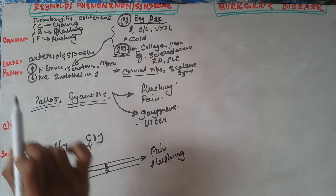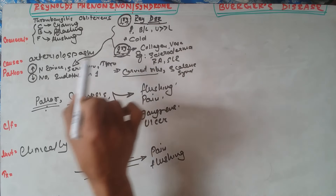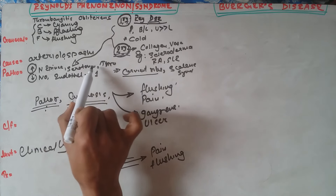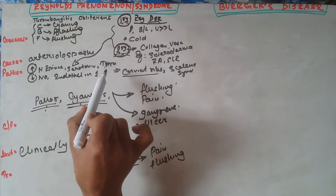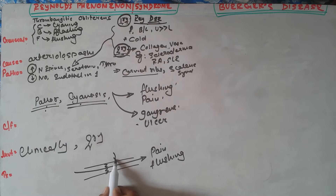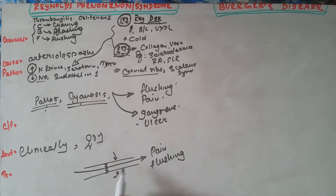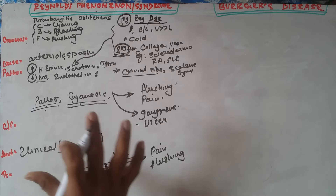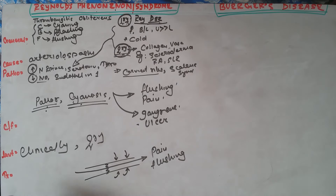Regarding pathophysiology: during cold exposure there is an increased amount of epinephrine, serotonin, and thromboxane, which are vasoconstrictors that predispose or increase the arterial spasm. The vasodilators like nitric oxide and endothelin-1 are decreased, which further increases the amount of vasospasm in the artery. This is the pathogenesis of Raynaud's phenomenon.